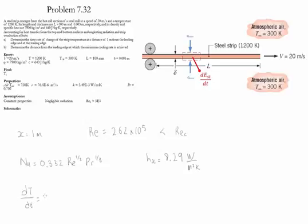Therefore, the change of temperature with respect to time is equal to negative 0.987 Kelvin per second. Notice that the temperature drops about 1 Kelvin per second, and we know it drops because the value of dT/dt is negative.